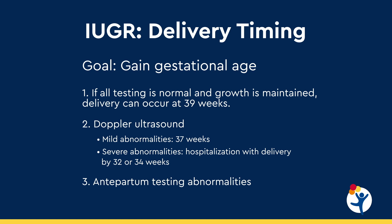If all testing is normal and growth is maintained, delivery can occur at 39 weeks, very close to the patient's due date. If Doppler ultrasound shows mild abnormalities, delivery may be recommended at 37 weeks. If there are severe abnormalities, hospitalization may be recommended with delivery by 32 or 34 weeks depending on the abnormality. Antepartum testing abnormalities can also dictate that delivery occur more quickly.